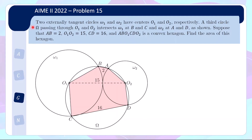So for this problem, it's a Jang Wen Shin problem. You have two externally tangent circles, omega 1 and omega 2, with centers O1 and O2. Then there's a third circle, capital omega, passing through O1 and O2, which intersects the first circle at B and C, and intersects the second circle at A and D. Suppose AB is 2, O1O2 is 15, and CD is 16, and we have a convex hexagon. Find the area of this hexagon.